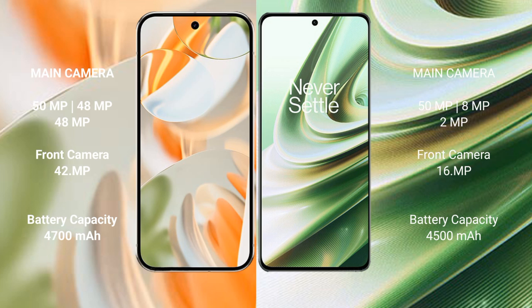The Google Pixel 9 Pro features a rear triple camera setup: 15MP plus 48MP plus 48MP, and a 42MP front camera.